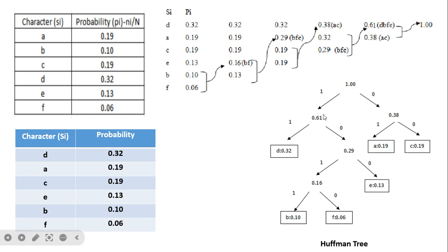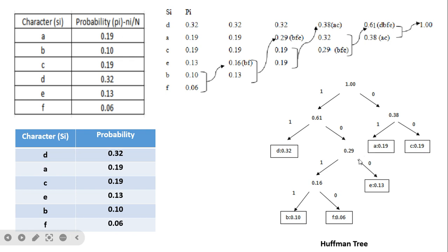The root (≈1) splits into 0.61 and 0.38. We trace back down to reconstruct each branch. Leaf nodes are marked with square brackets, making it easy to count the number of bits needed to represent each character from the root to the leaf.